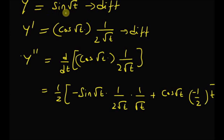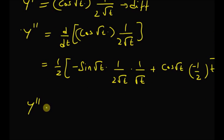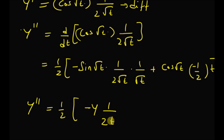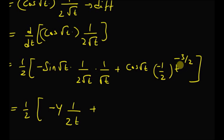By using the definitions y = sin(√t) and y' = (1/(2√t)) · cos(√t), we can rewrite the second derivative as y'' = −(1/2) · y · (1/t) − (1/2t) · cos(√t) · t^(−3/2), which simplifies to −(1/t) · y'.